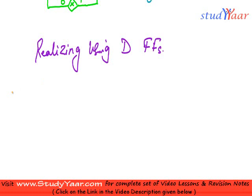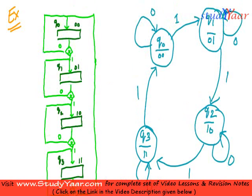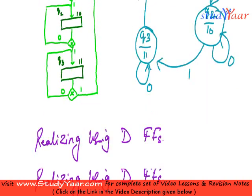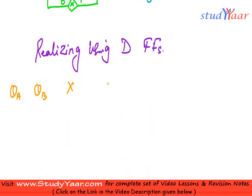Let us suppose this is QA and QB. Then I have my X input. What is X? X is this. This is the input. I am assuming this variable to be X. Then I have my QA plus 1, I have my QB plus 1. I have my D inputs. Let's call them DA and DB.